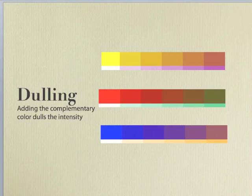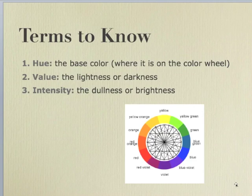So terms to know, to wrap this up, are hue, which is the basic color, the name of the color, where it lives on the color wheel or the spectrum, value, also known as brightness, lightness or darkness, and intensity, also known as saturation.